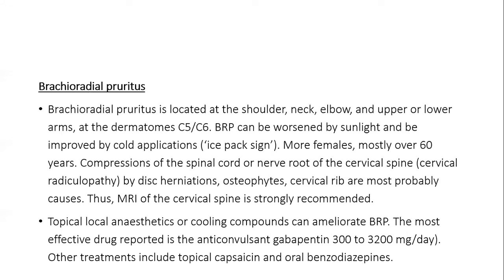Brachioradial pruritus is a similar condition located in the shoulder, neck, elbow and upper and lower arm in dermatomes C5 and C6. It is worsened by sunlight and improved by cold application — the ice pack sign. More females are affected, mostly over 60. Compression of the spinal cord and nerve root of the cervical spine — by disc herniation, osteophytes or cervical rib — is the most important cause, so MRI of the cervical spine is strongly recommended. Topical local anesthetic or cooling compounds ameliorate pruritus. The most effective drug is the anticonvulsant gabapentin 300 to 3200 mg per day. Other treatments include topical capsaicin and oral benzodiazepines.